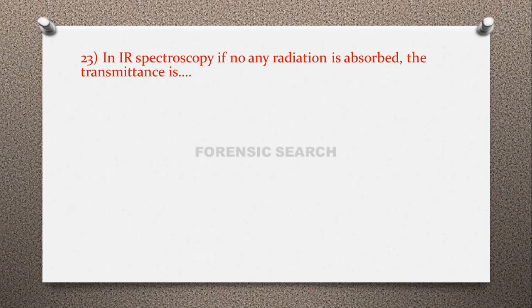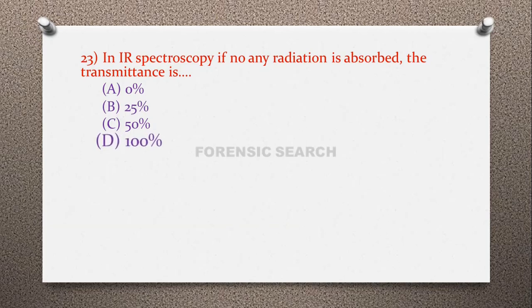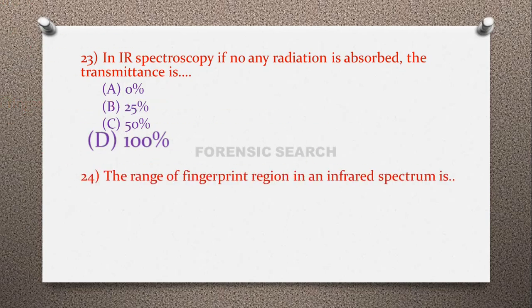Question 23: In IR spectroscopy, if no IR radiation is absorbed, the transmittance is — option A: 0%, option B: 25%, option C: 50%, option D: 100%. The correct answer is option D — 100%. In IR spectroscopy, if no IR radiation is absorbed the transmittance is 100%, and if all the radiation is absorbed, the transmittance is 0%.